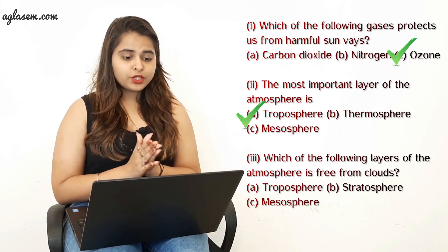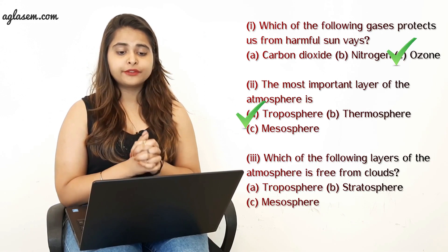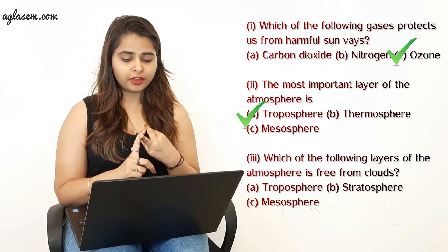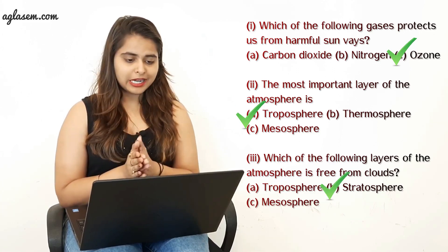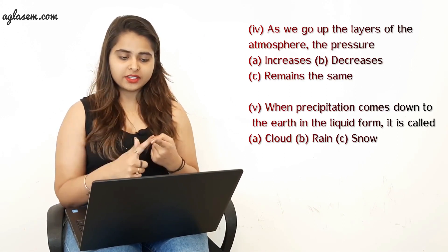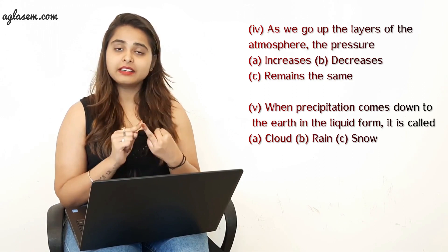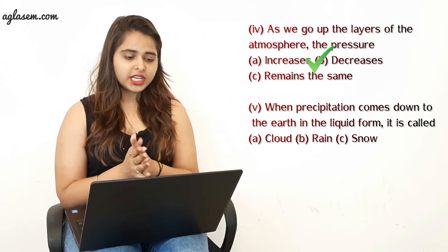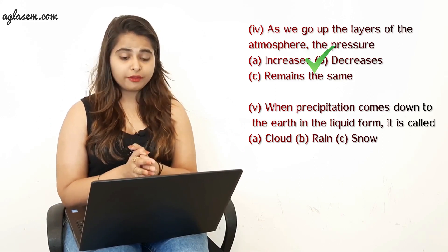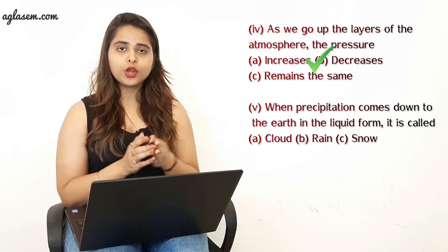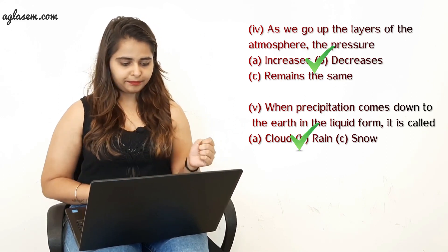Third part: Which of the following layers of the atmosphere is free from clouds? Options are troposphere, stratosphere, and mesosphere. The answer is B — stratosphere. Fourth: As we go up the layers of atmosphere, the pressure — increases, decreases, or remains the same? The answer is decreases. Fifth: When precipitation comes down to the earth in liquid form, it is called cloud, rain, or snow? The answer is B — rain.